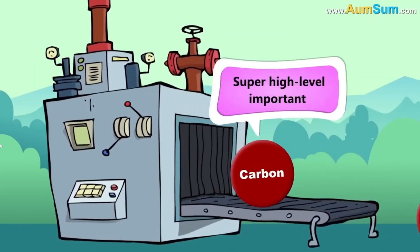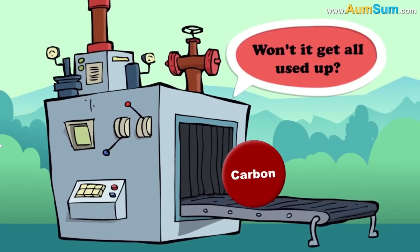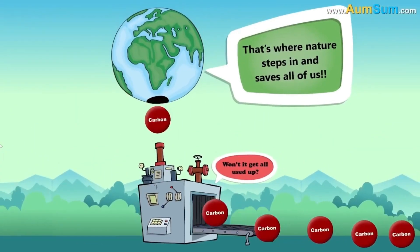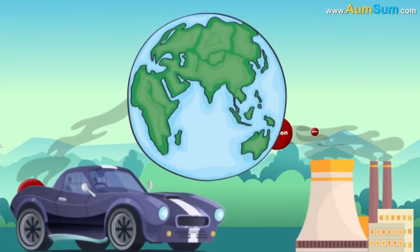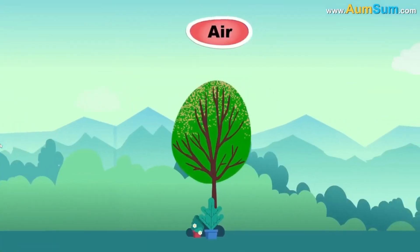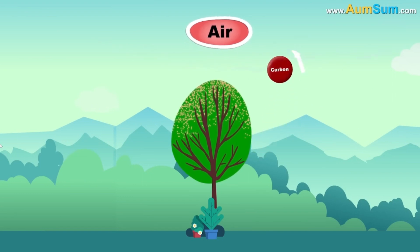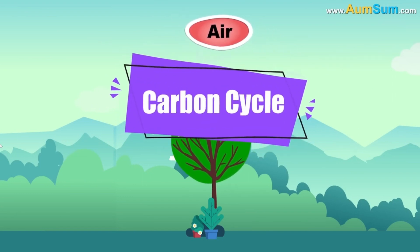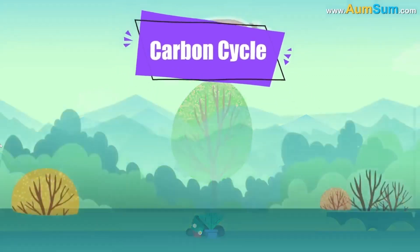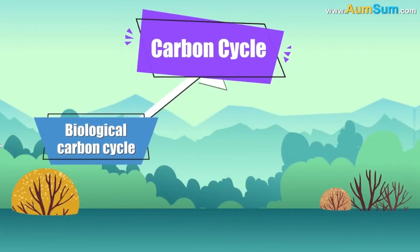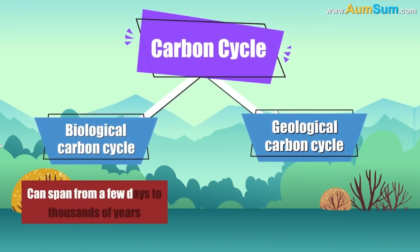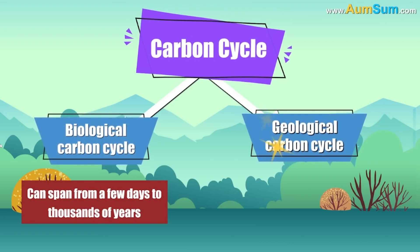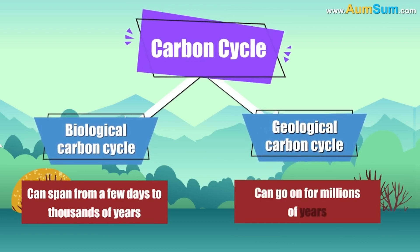If carbon is so important, won't it get all used up? That's where nature steps in and saves all of us. It is constantly recycling carbon so that we don't run out. Just like a spinning wheel, carbon is constantly circulating between living and non-living things. This cycle is called the carbon cycle. We can further divide this cycle into the biological carbon cycle and the geological carbon cycle. The biological cycle can span from a few days to thousands of years, while the geological cycle can go on for millions of years.